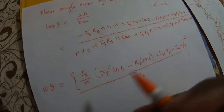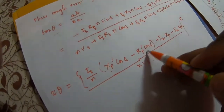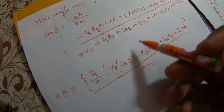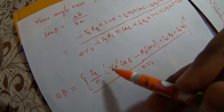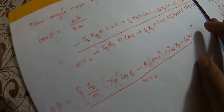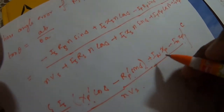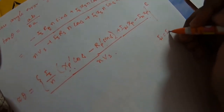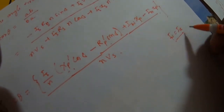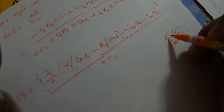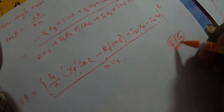One thing I forgot to mention: Xp' is the equivalent reactance of the transformer referred to the primary side, and Rp' is the equivalent resistance referred to the primary side. Also, Iw and Ie are actually the same — Iw is the energy component, also called the working component. In some cases I may have written Iw = I, but both refer to the same thing, so don't get confused.